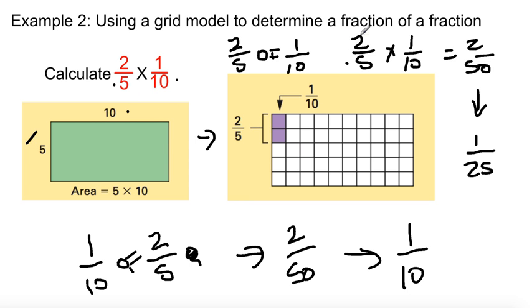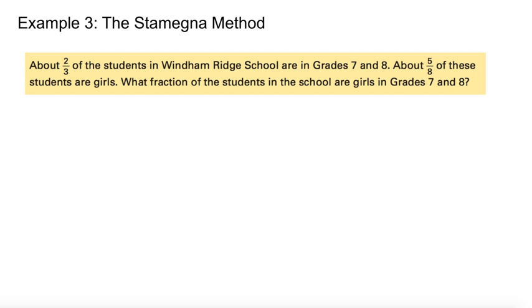Let's see if this method works. I playfully called it the Stamina method but it's not really, I didn't really put this method together, I'm just going to demonstrate it. Here's another question: about two-thirds of the students at Windham Ridge School are in grades seven and eight. About five-eighths of these students are girls. What fraction of the students in the school are girls in grades seven and eight?